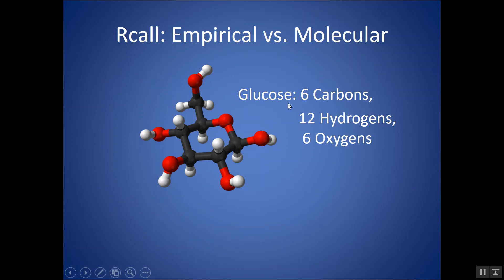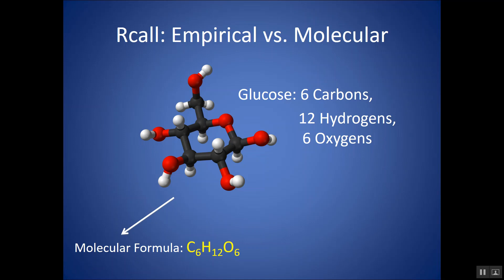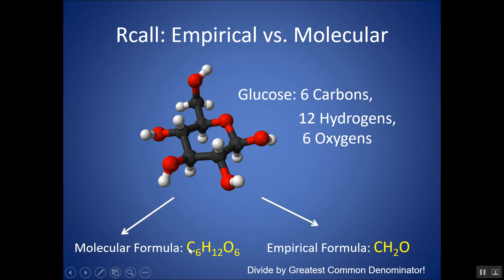Say we had a molecule like glucose, which contains 6 carbons, 12 hydrogens, and 6 oxygens. The molecular formula would be C6H12O6. There are actually 6 carbon atoms, 12 hydrogen atoms, and 6 oxygen atoms — the subscripts represent atoms actually there. But a 6 to 12 to 6 ratio can be simplified. The empirical formula, also called the simplified formula, would be CH2O. Dividing all numbers by the greatest common denominator — in this case 6 — gives: 6÷6=1, 12÷6=2, 6÷6=1. So you're looking for the greatest common denominator between all subscripts and dividing by it to get the empirical formula.